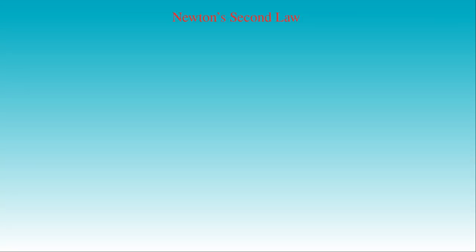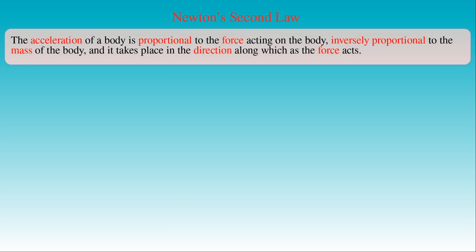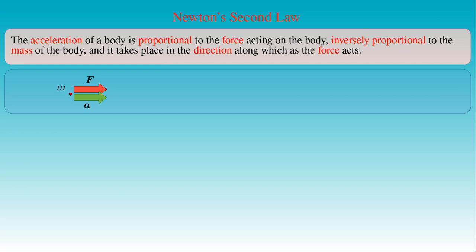In these experiments, we determine the relationships between the force acting on a body, the mass of the body, and the acceleration of its motion. Based on these findings, we can state Newton's second law in the following form: the acceleration of a body is proportional to the force acting on the body, inversely proportional to the mass of the body, and it takes place in the direction along which the force acts. Here we can see a point-like body or point mass with mass M. The horizontal red arrow represents the force F acting on the point mass, which produces the acceleration A of the moving body represented by the horizontal green arrow.